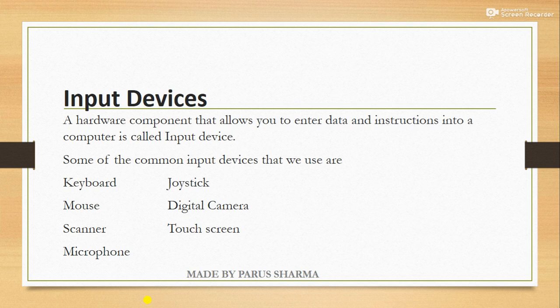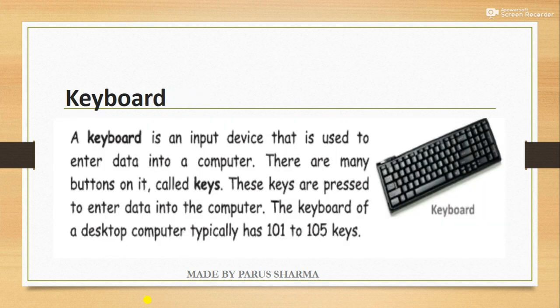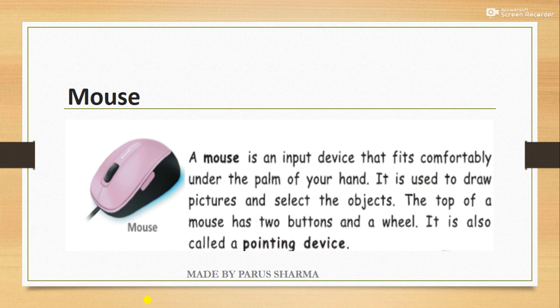Examples of input devices are keyboard, mouse, scanner, microphone, joystick, digital camera, and touchscreen. The keyboard is an input device used to enter data into a computer, like alphabets, numbers, words, and sentences — whatever you want to type. Then we have the mouse, also called a pointing device, used to point objects on a computer and to open them.